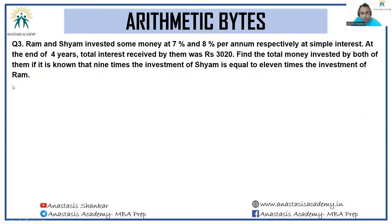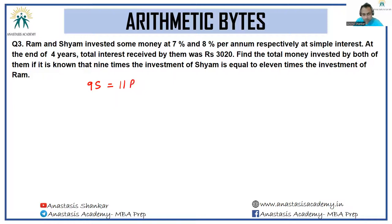Next: Ram and Sham invested some money at 7 percent and 8 percent per annum respectively at simple interest. At the end of four years, total interest received was 3020. It is known that 9 times the investment of Sham equals 11 times the investment of Ram, so Sham to Ram investment ratio is 11 to 9.